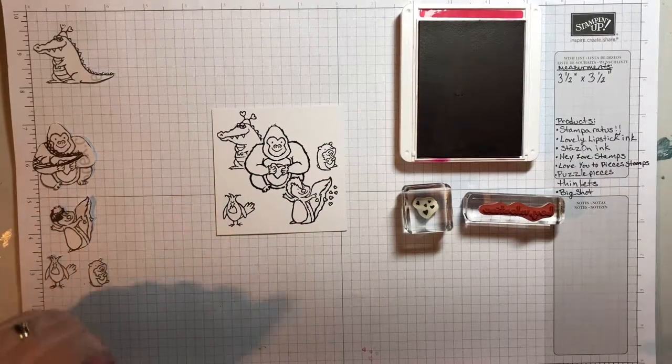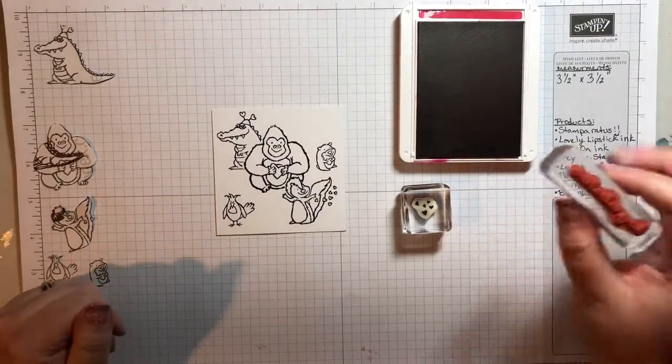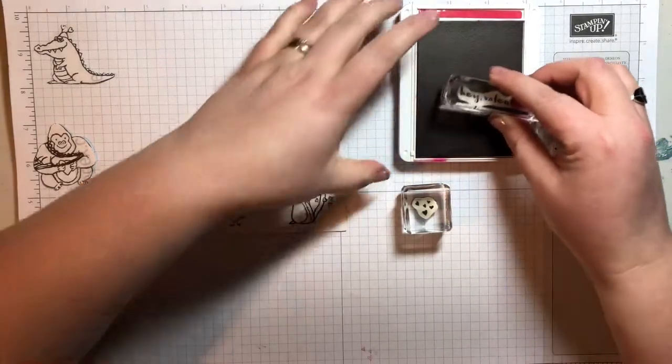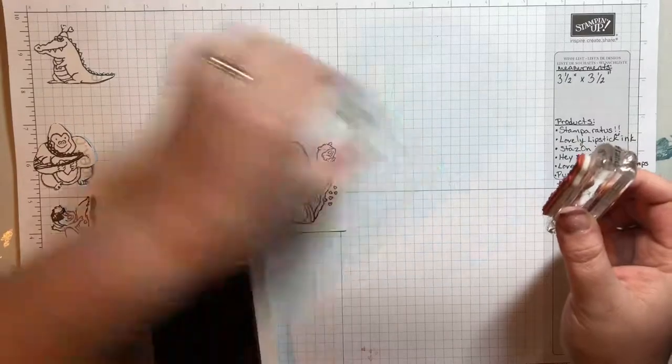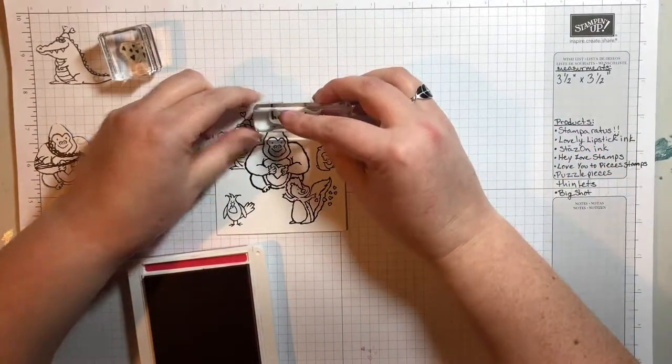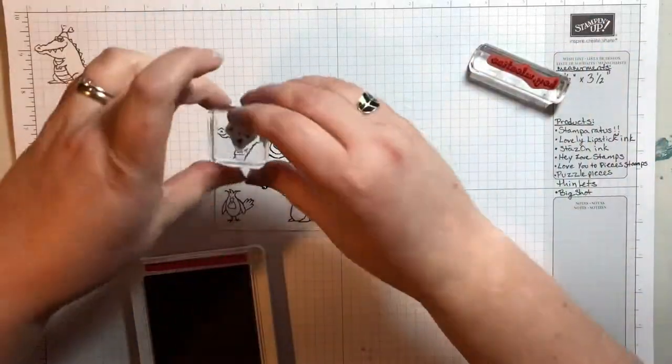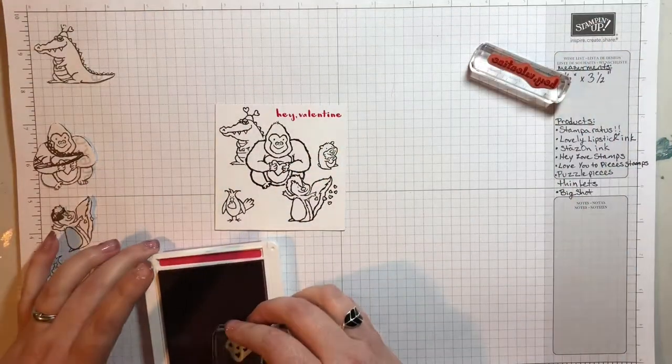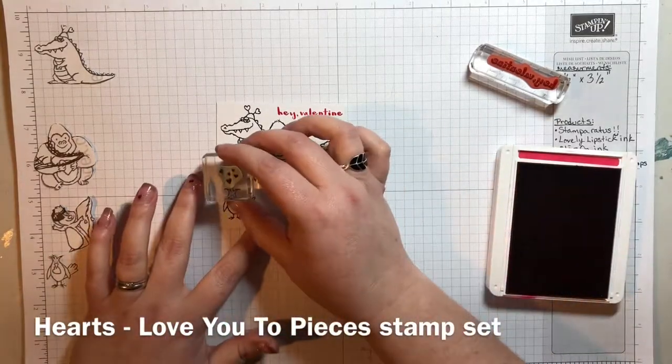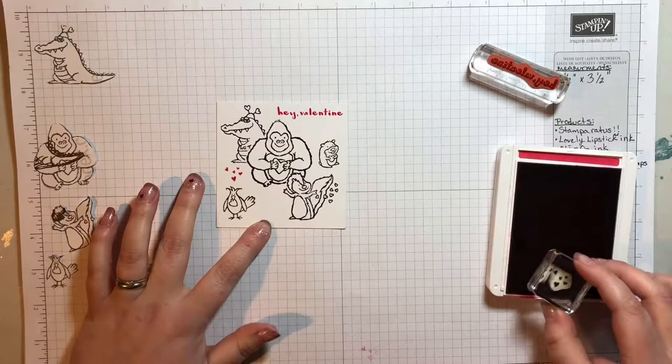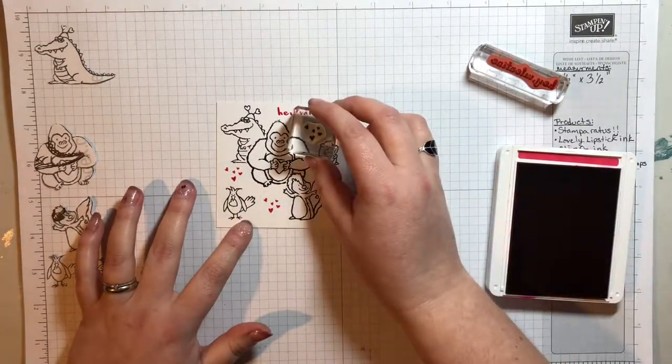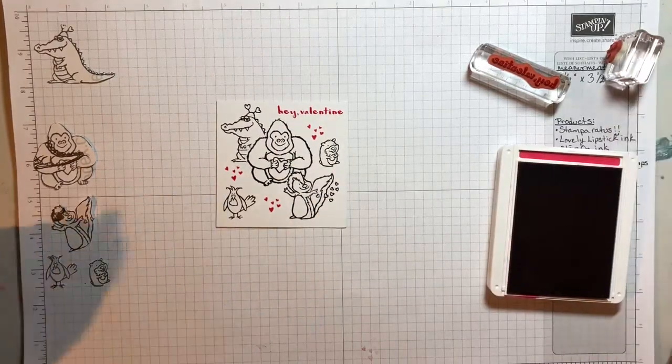So now all we have left to do is we're going to use the lovely lipstick ink and stamp on our sentiment. And we're going to stamp a few of these little hearts from the puzzle piece heart set, just to kind of fill in the space a little.